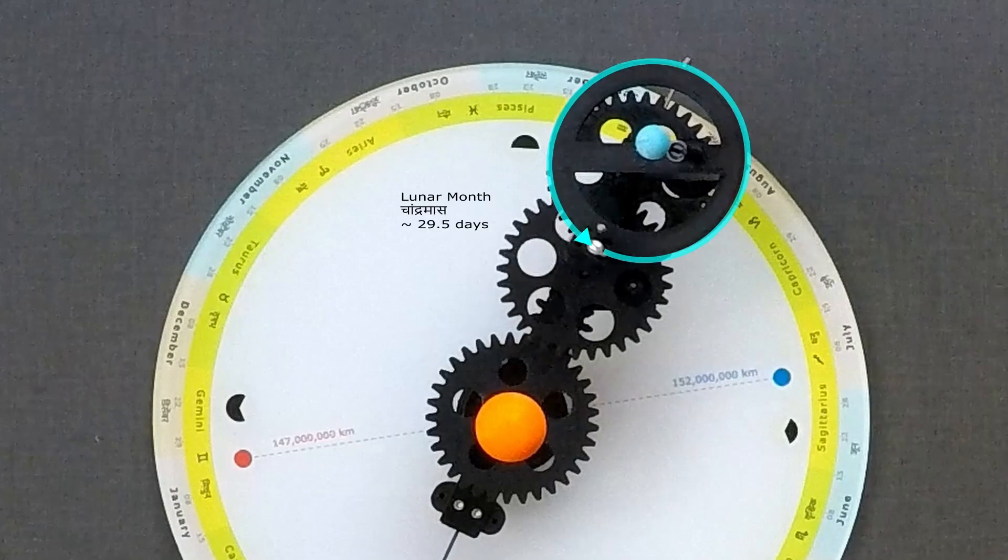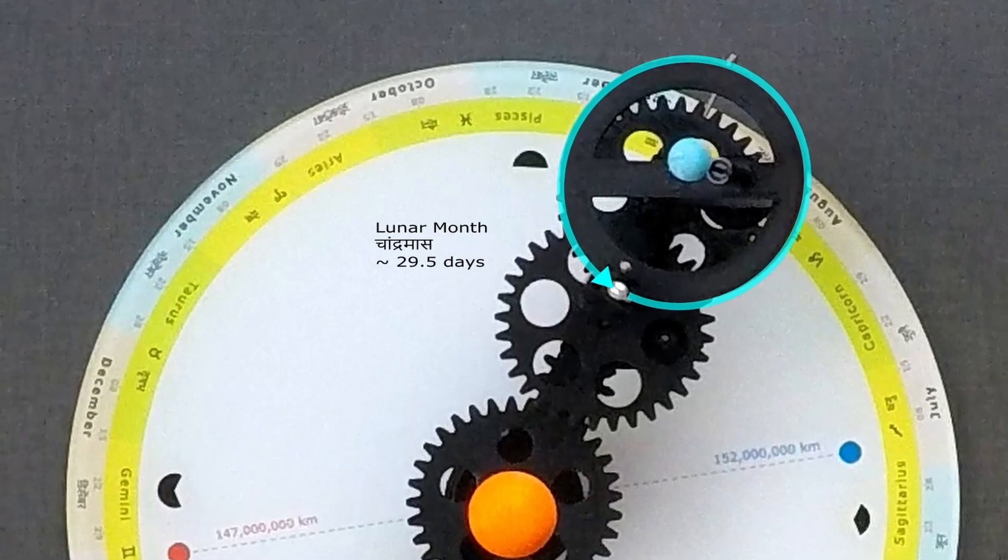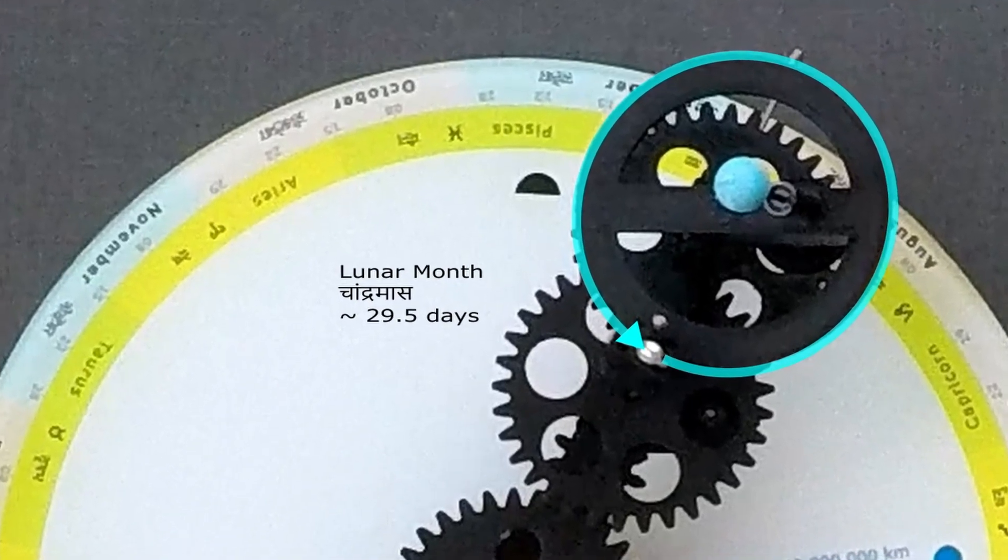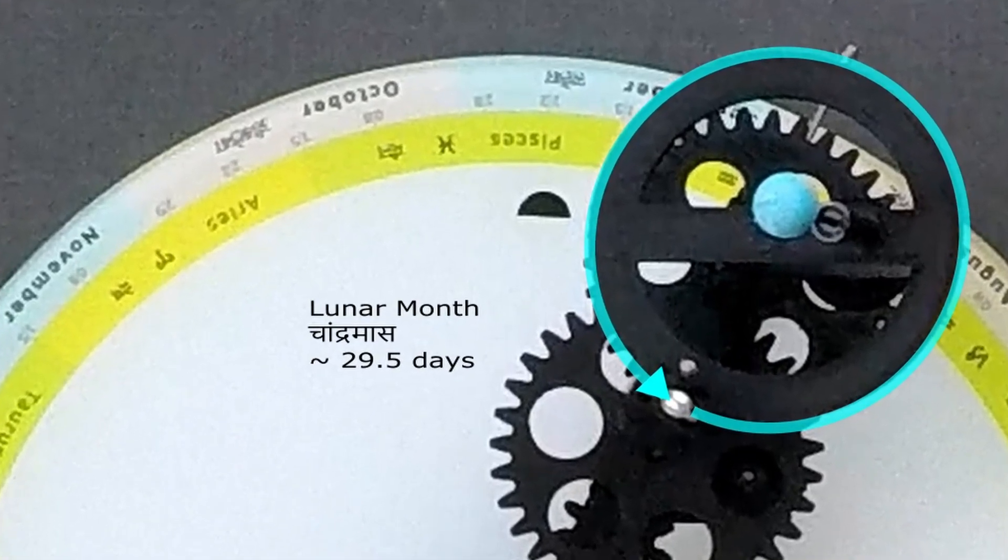It takes approximately 29 and a half days to come back to the same position. That is, from one new moon to the next new moon, or from one Amavasya to the next Amavasya. This period is also known as the Lunar month.